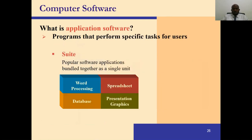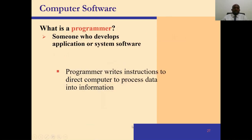Application software consists of programs that perform specific tasks for users. Examples include word processing (Microsoft Word), spreadsheet (Microsoft Excel), database, presentation software (PowerPoint), and apps like Facebook. Applications you use on the internet or on your computer — such as Zoom, YouTube, Facebook, and Twitter — are all application software because they help you do a specific task.